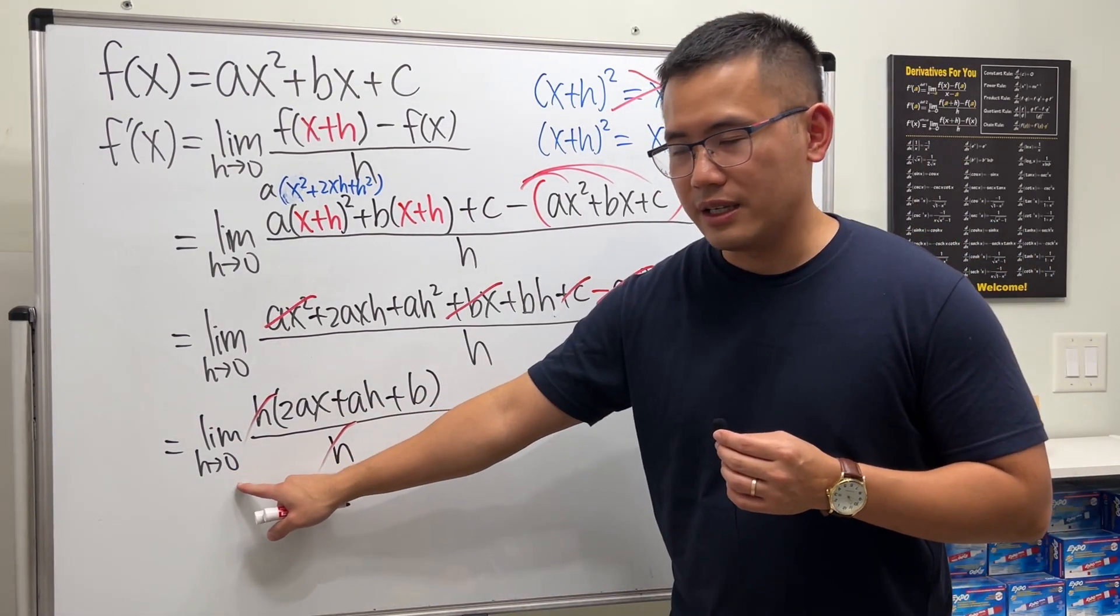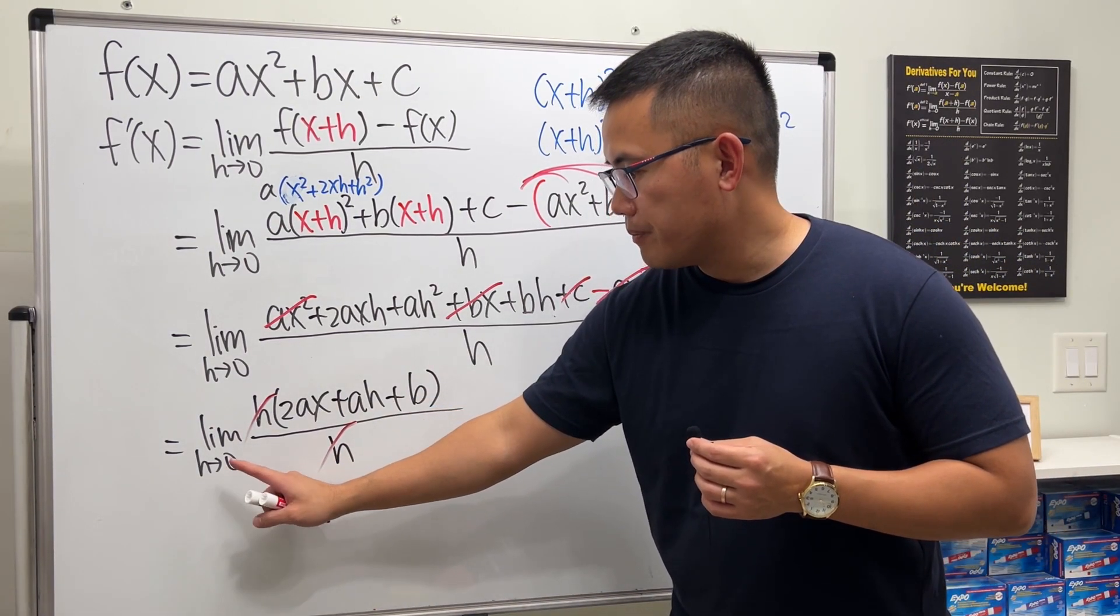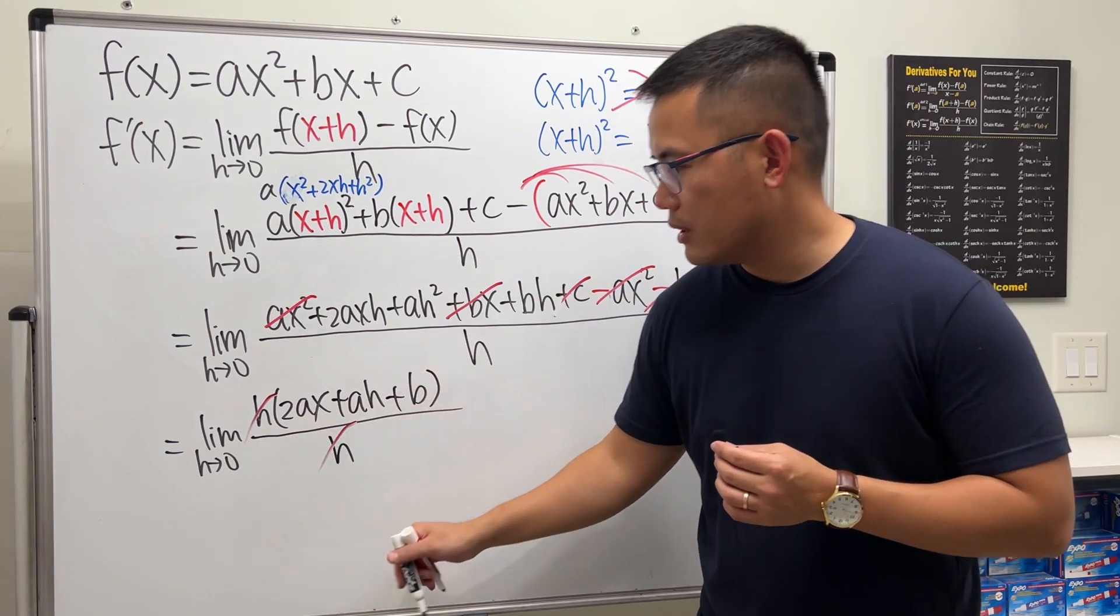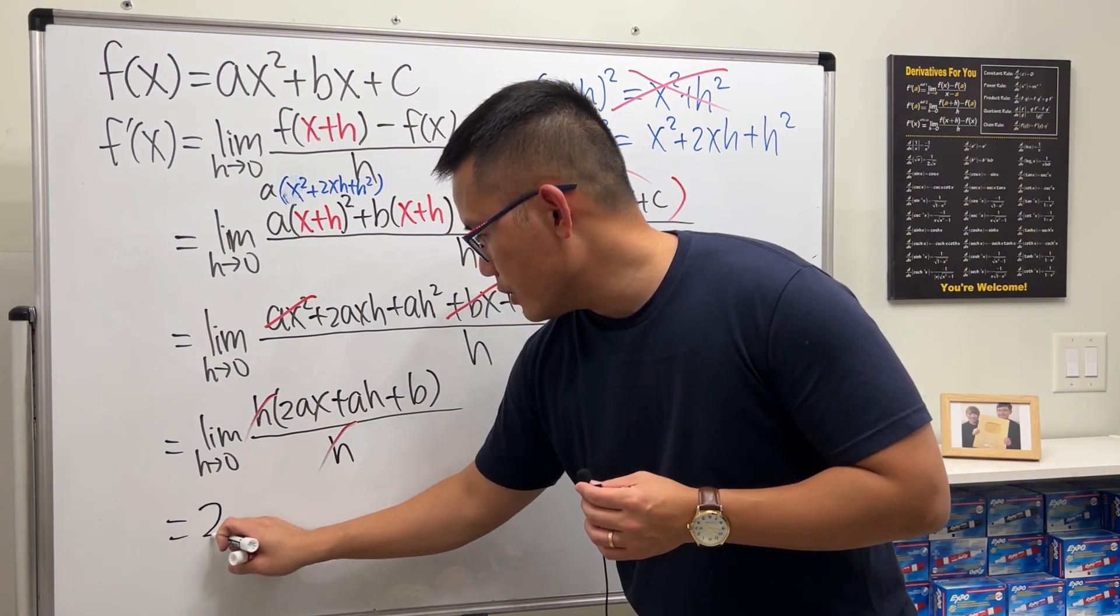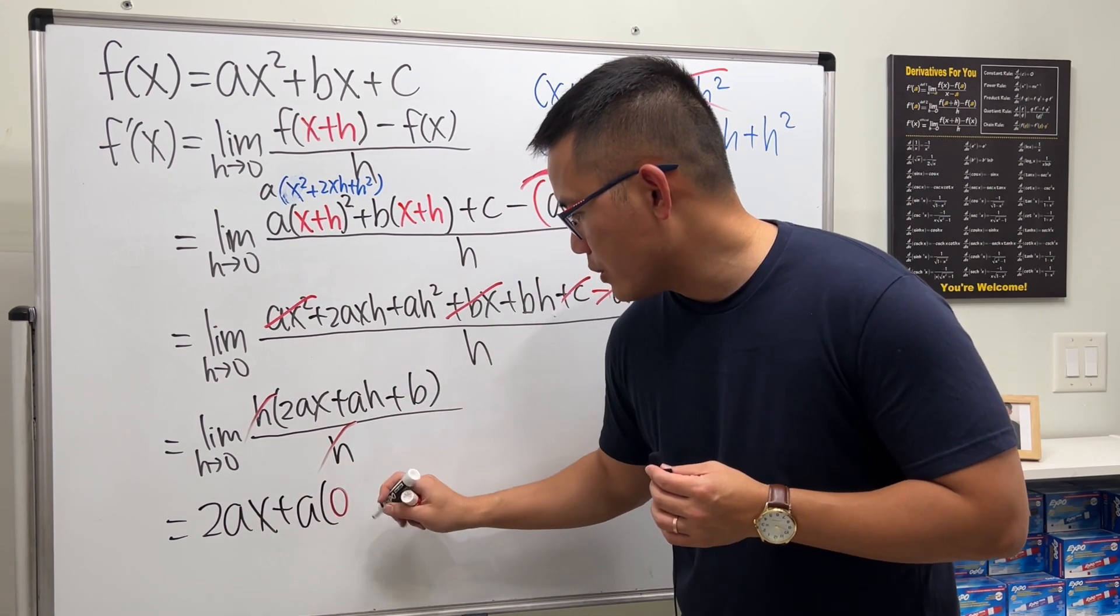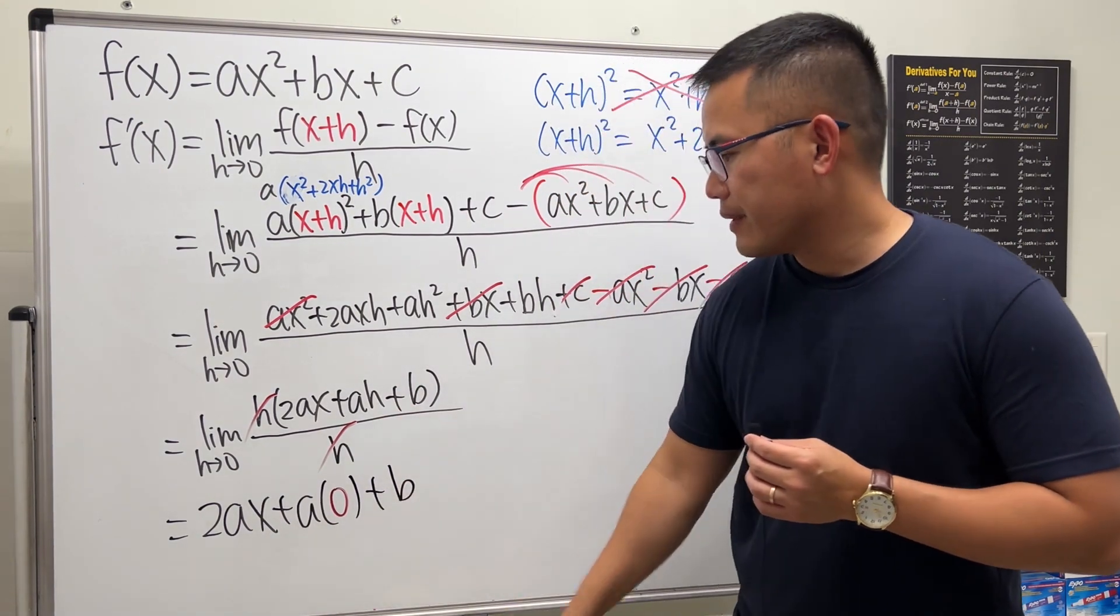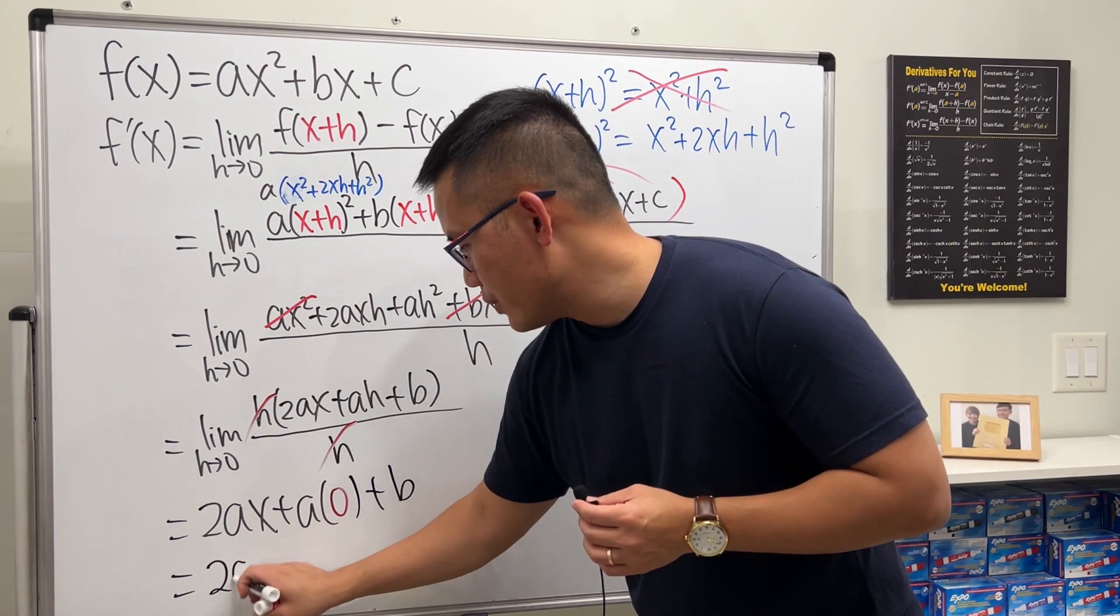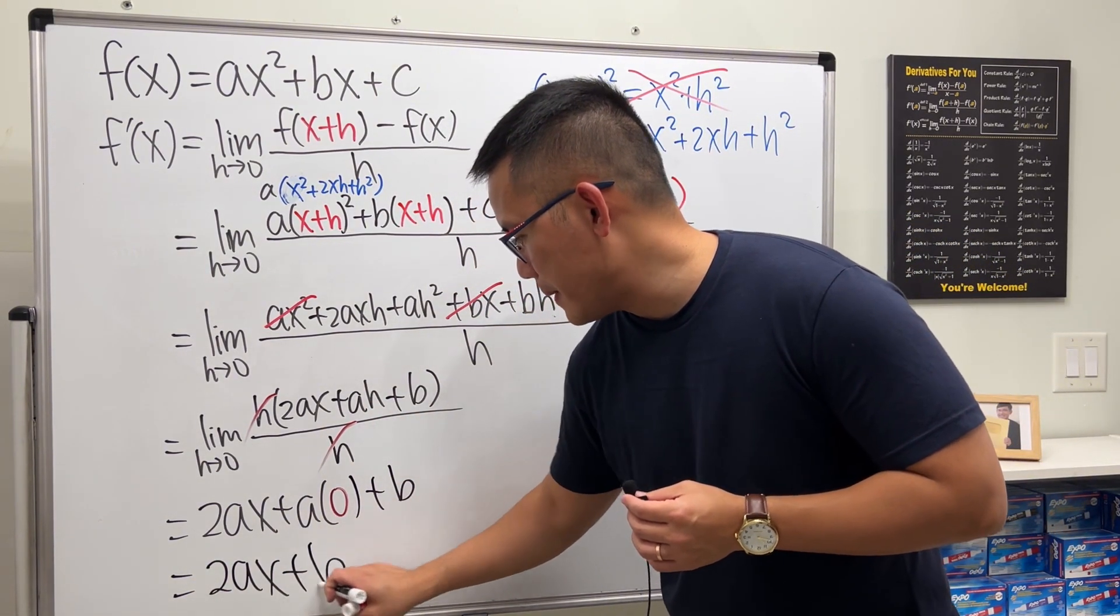Finally, don't forget, this is h approaching 0. Be sure you put 0 into this h. So we get 2ax plus a times h, which is 0, and then plus b. That's of course 0. So final answer, 2ax plus b.